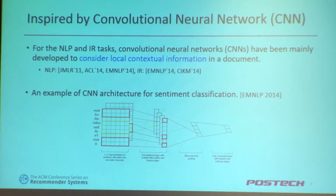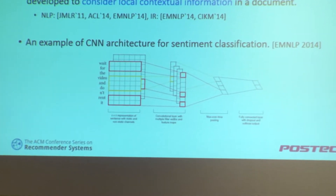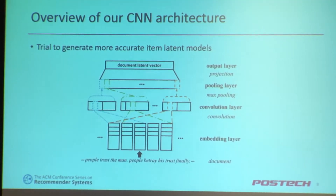ConvMF is inspired by convolutional neural networks. For NLP and IR tasks, many CNN variants have been developed to consider local contextual information in documents. Typically, CNN consists of a convolutional layer and a subsampling layer to extract meaningful local contextual features. As our research trial to generate more accurate item latent models, we model a simple CNN architecture consisting of four different layers.